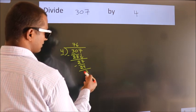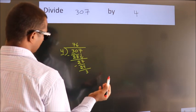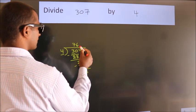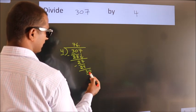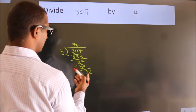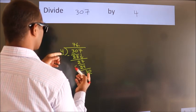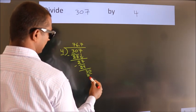After this, no more numbers to bring down. So what we do is, we put dot, take 0. So 30. A number close to 30 in 4 table is 4 7s, 28.